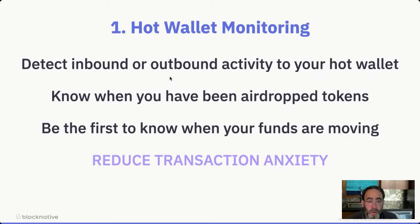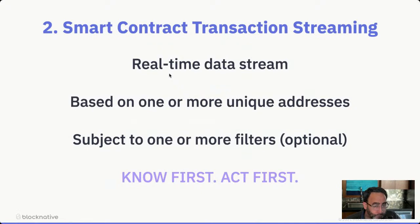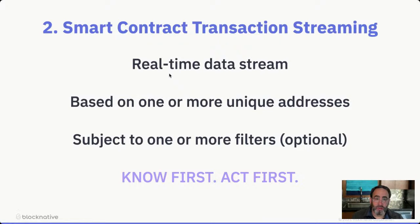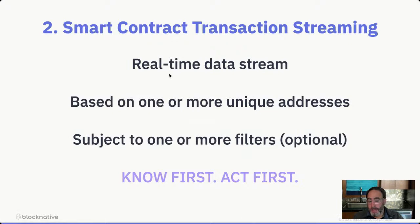That was hot wallet monitoring. Now I'm going to do something quite a bit more sophisticated. Using similar ideas as before, instead of looking at a wallet address, we're going to look at some very popular smart contract addresses and filter on those with the idea of being able to know first or act first. One of the big advantages of a real-time mempool data platform is we can look at any address — even addresses that don't exist yet or have no transaction volume yet — because our platform is collecting everything.